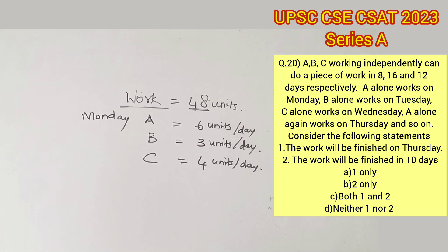Now it's given that A works on Monday, B alone works on Tuesday, C alone works on Wednesday, and A alone works on Thursday, and so on. We know that A completes 6 units per day, so Monday A would have completed 6 units out of the 48 total units.